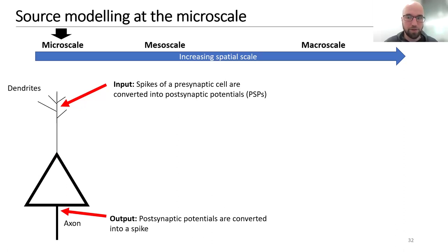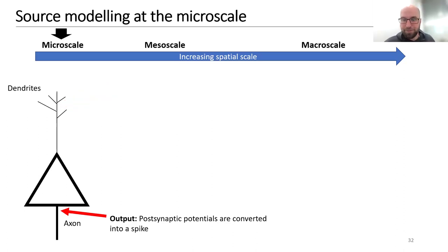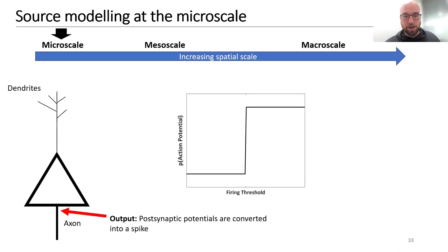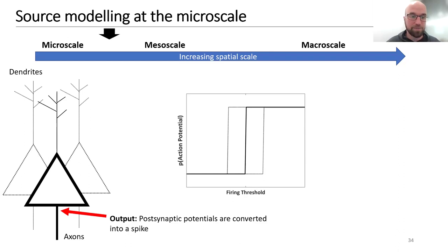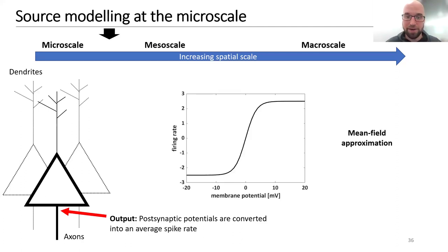Now for the output operation: how postsynaptic potentials are converted into a spike. The simplest way is a step function — if the membrane potential exceeds a firing threshold, there will be a spike. If we consider not just one pyramidal cell but multiple cells with slightly different firing thresholds, averaging over those thresholds gives us a sigmoid function. This is called a mean field approximation.